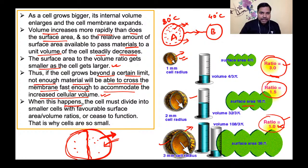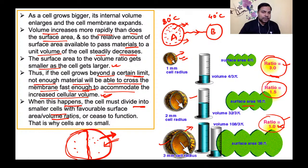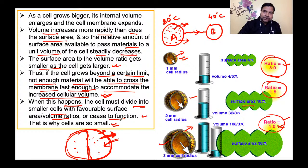When this happens, the cell must divide into smaller cells with favorable surface area to volume ratio, or cease to function — या तो divide करेगा, नहीं तो perish करेगा। This is why cells are so small।